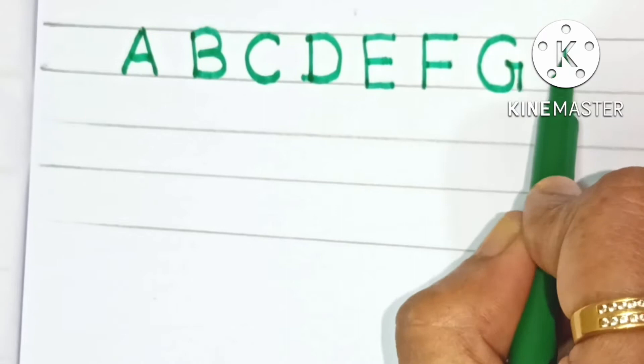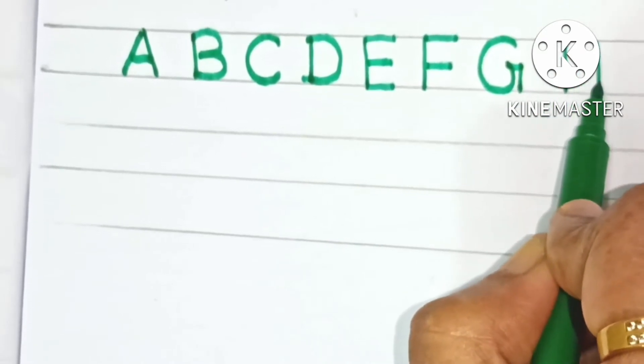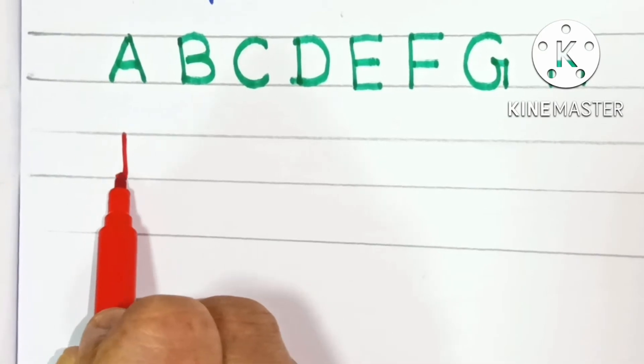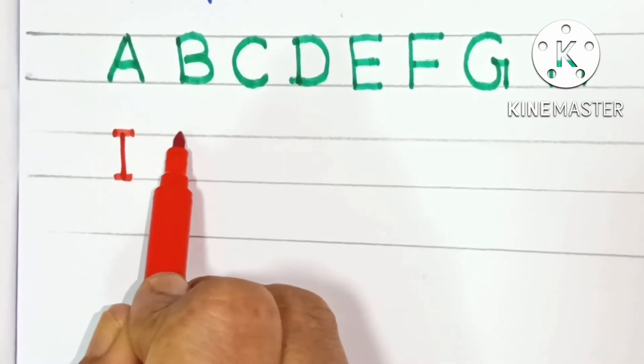G, G for Goat. H, H for House. I, I for Ink.